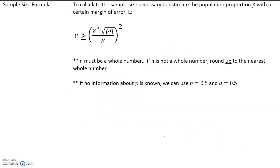Lastly, to calculate the sample size necessary to estimate the population proportion with a certain margin of error E: we want to get a sample that is big enough to give us a particular margin of error. We know what the critical value is, we know what P and Q are, and E is the margin of error that we desire. N must be a whole number — if N is not a whole number, always round up to the nearest whole number in order to be on the safe side, because we don't want a sample size that's too small.